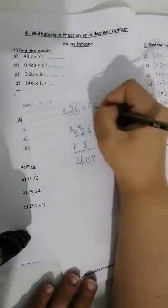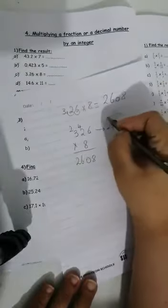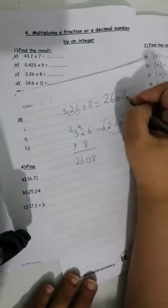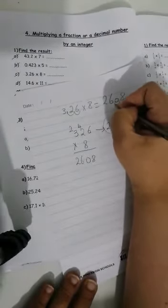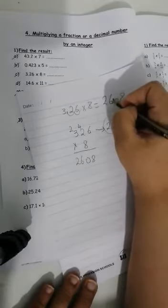So my answer here will be 2, 6, 0, 8. Don't forget this. 2 decimal places. So I will move from back. 1, 2. So my answer goes here. 26.8.